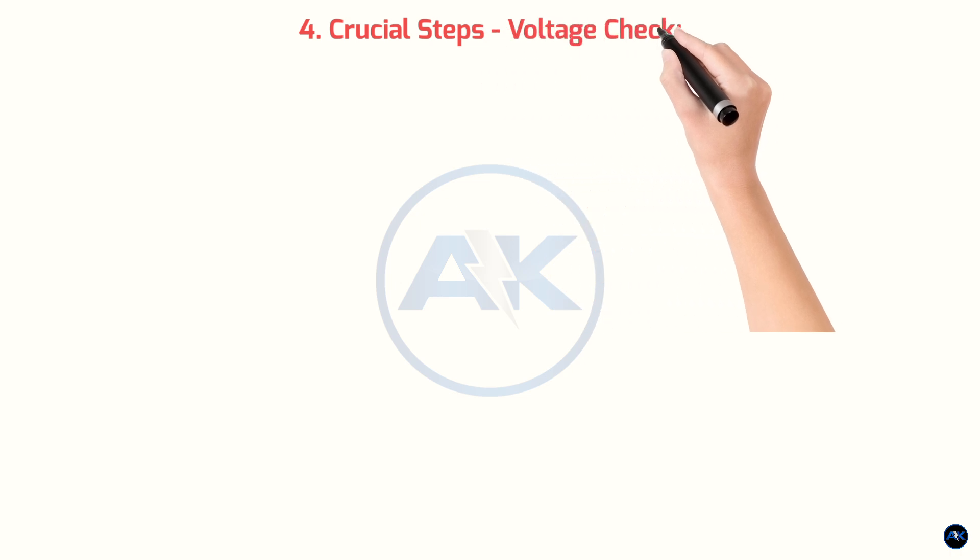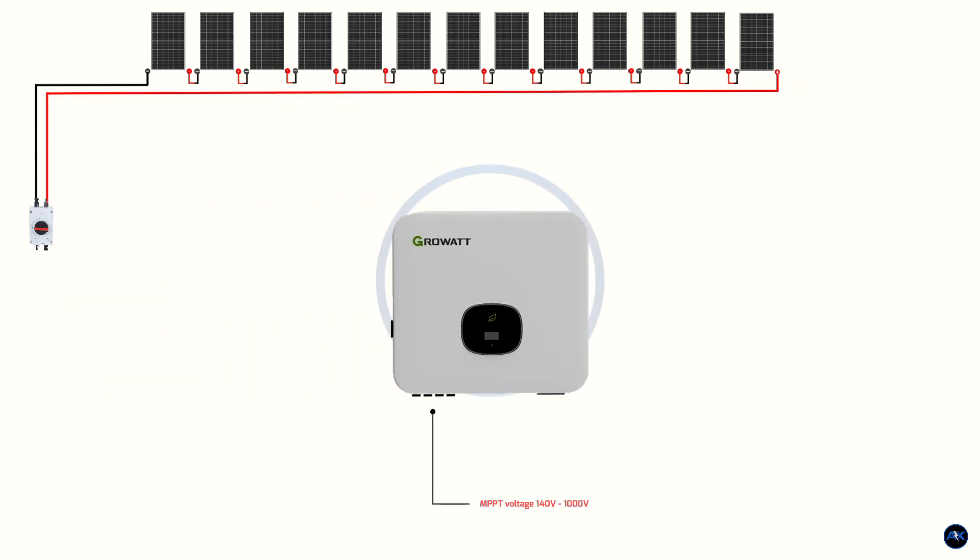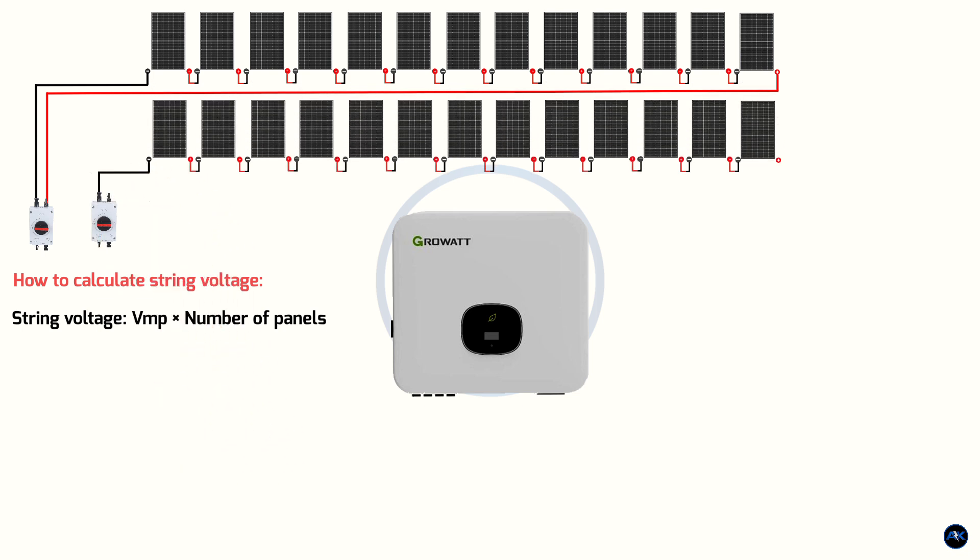Crucial steps. Voltage check: string voltage. You must ensure the voltage of your solar panel string falls within the inverter's MPPT voltage range, 140V to 1000V. How to calculate string voltage? Multiply the panel's VMP by the number of panels in a string. String configuration: you need to decide how many panels you'll have in each string and how many strings you'll have. This depends on the panel's voltage and the inverter's MPPT trackers. Example: you could have two strings of 13 panels each, total 26 panels or other configurations. Ensure the voltage of your solar panel strings is compatible with the inverter.